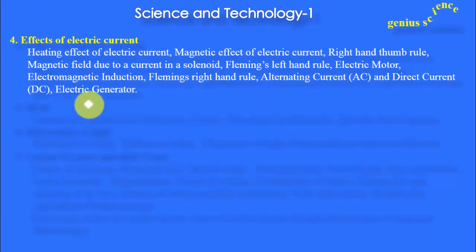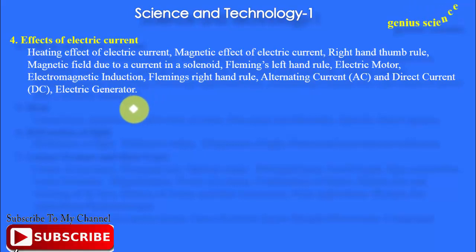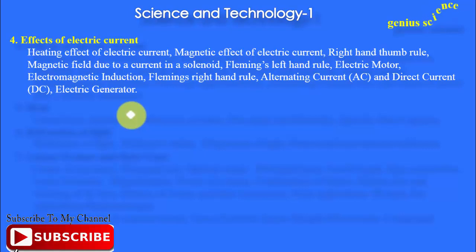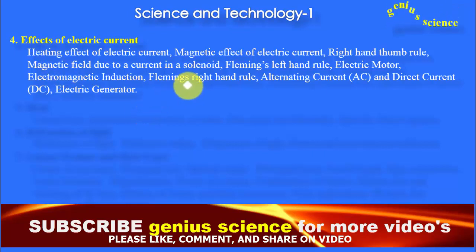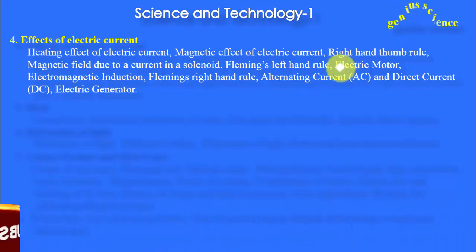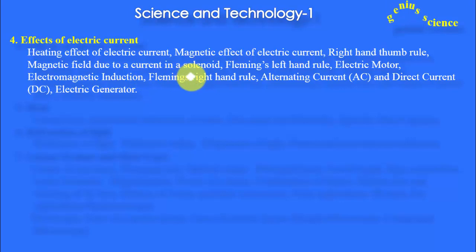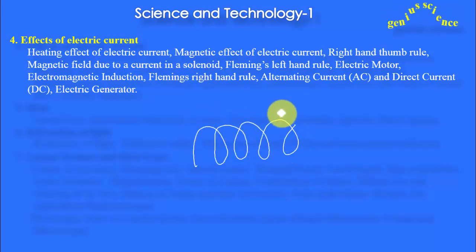In this chapter, when we pass current through a conductor, that conductor shows different effects: magnetic effect, light effect, sound effect, and different types of effects. We are going to learn the heating effect of electric current, the magnetic effect of electric current, the right-hand thumb rule, magnetic field due to a current in a solenoid, and Fleming's left-hand rule.